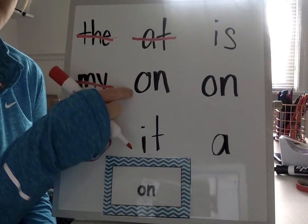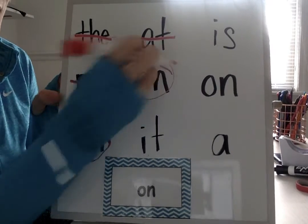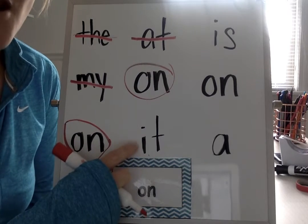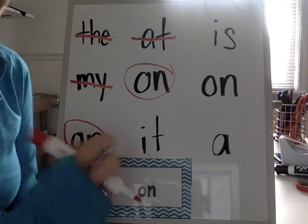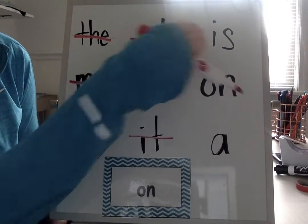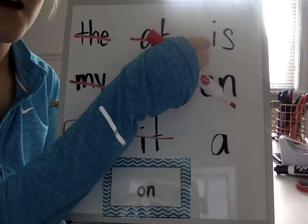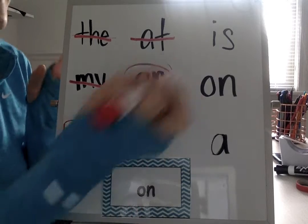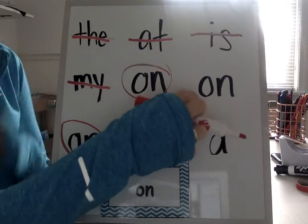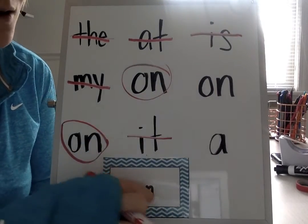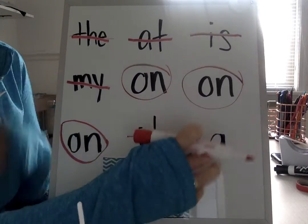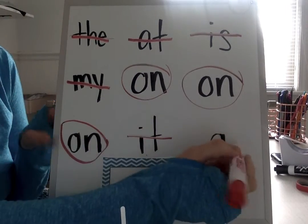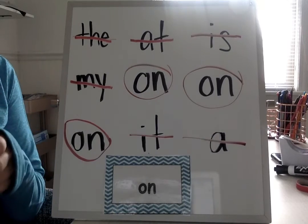What about this one? Is this the word on? Yes. We have O-N. What about this? Is this the word on? No. What word is this? It. Very good, not on. What about this one? Is this on? No. What word is that? Is. Very good. What about that? Is that the word on? Yes — O-N. Very good. And the last one — is that the word on? No, that's the word a. Cross it out. Excellent. Very good.